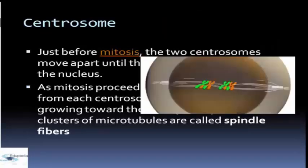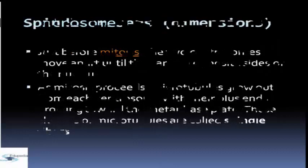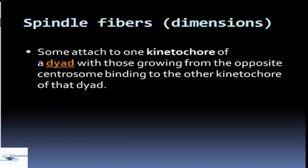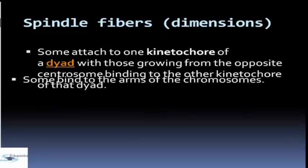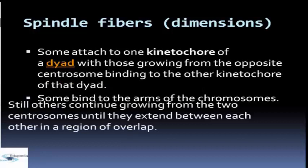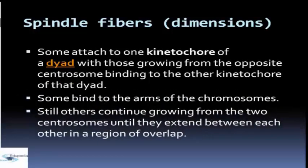As you can see in the picture, these are the spindle fibers. When we see spindle fibers in terms of dimension, some attach to one kinetochore of a dyad, with those growing from the opposite centrosome binding to the other kinetochore of that dyad. Some bind to the arms of the chromosomes, while others continue growing from the two centrosomes until they extend between each other in a region of overlap.